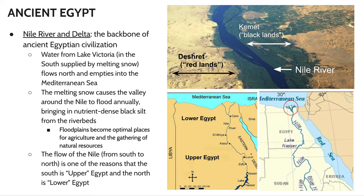One of the reasons the Nile is such a vital part of ancient Egypt is the annual flooding of the Nile Delta and the surrounding lands. This diagram illustrates that everything within close proximity to the Nile River is fertile — these are the Kemet or Black Lands, called Black Lands because of the nutrient-rich silt brought down the Nile. Pretty much anything not in direct contact with the Nile is the Red Lands, or desert.